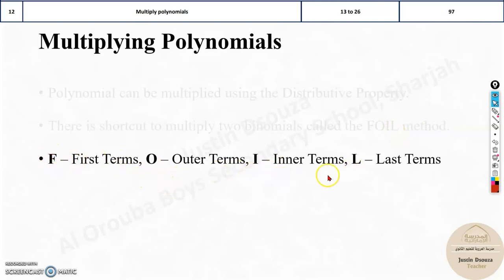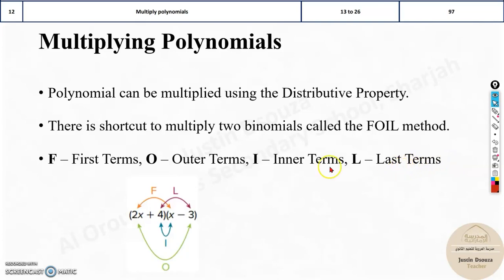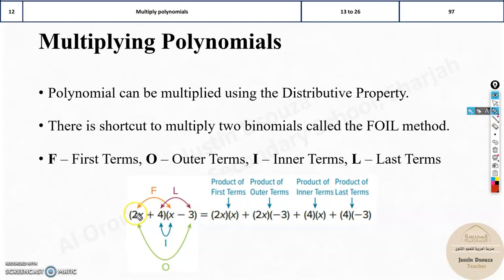FOIL means first terms, outer terms, inner terms, and last terms. Now imagine we have these two terms over here. First, you need to multiply the first two terms in these binomials. That is, this multiplied by this gives you 2x times x.